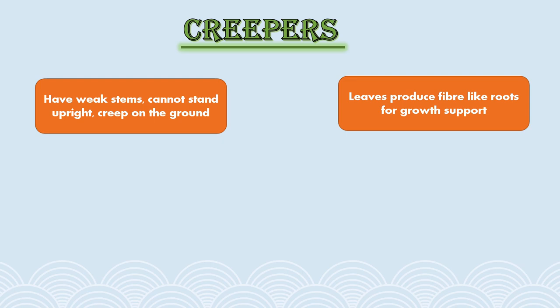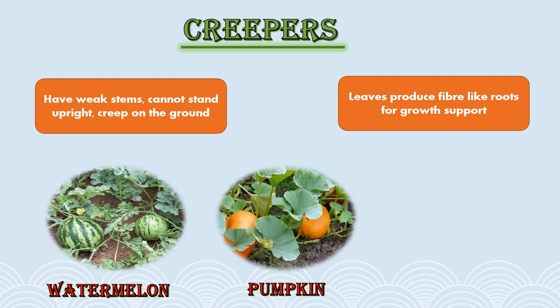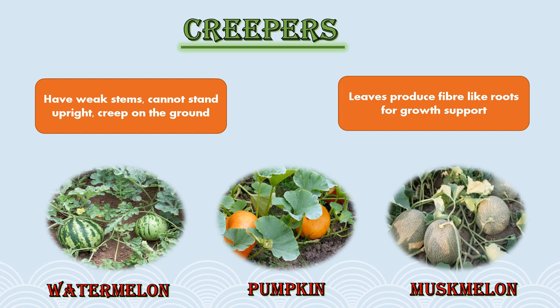Some examples of creepers are watermelon, pumpkin, and muskmelon. You must have seen all these plants, but now you understand why the fruits were lying on the ground — because they are creepers.